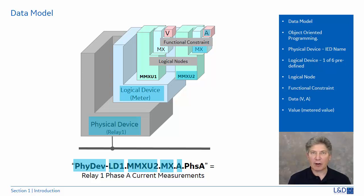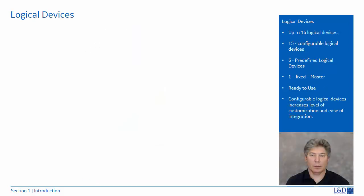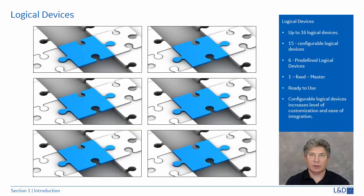The data breaks down the category further, such as volts, amps, or breaker position. The last part is the value — in this case, phase A magnitude. In other data groups, we could be monitoring the status of a breaker: is it open or is it closed? We could also be monitoring quality data or a timestamp. There are 16 logical devices — six are predefined, 15 are configurable, and one is fixed and hard-coded and cannot be altered.